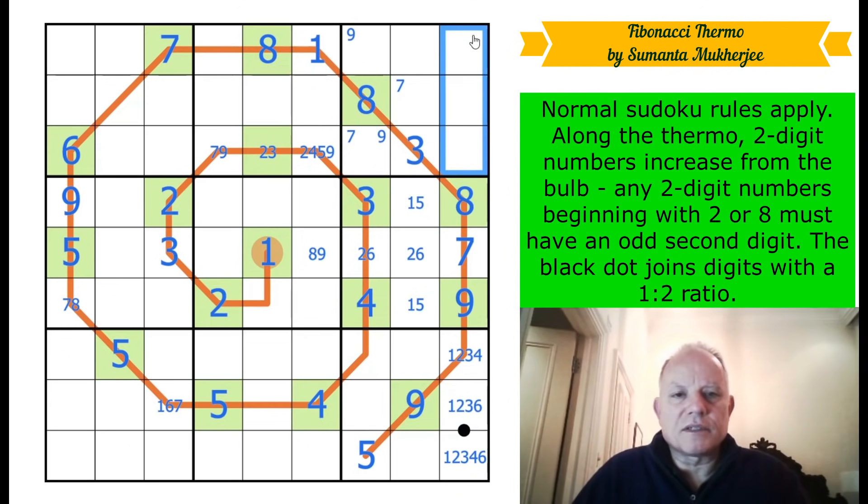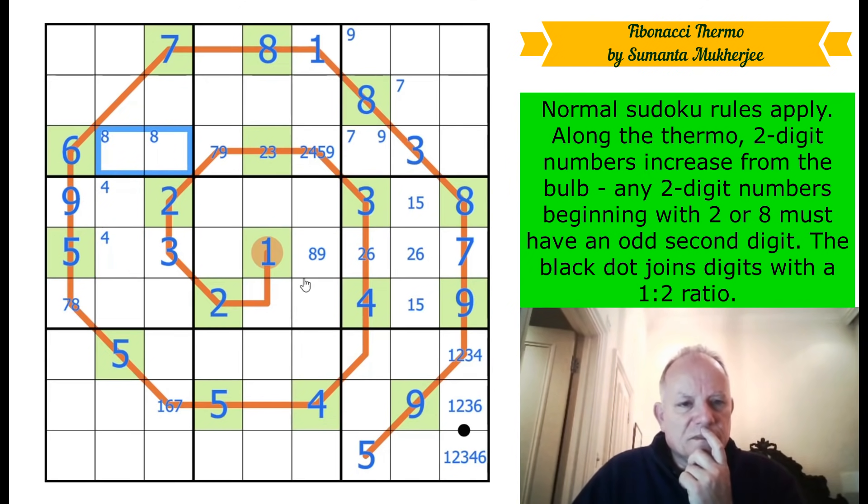But they're from one, two, three, four, and six. So five is up here somewhere. That's not helpful. Right, nine, five, two, three. So that four appears there somewhere. Eight, one of those is an eight. Four in this box, not very useful. Three is in one of those two positions.